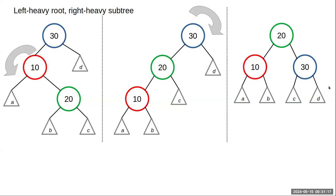And that's the AVL algorithm — I'm presenting this with zero proof. You may want to look at the code, draw some diagrams, and see if you can actually do a rotation of a tree. Build yourself a tree, make it out of balance, and see if you can put it back into balance by hand.